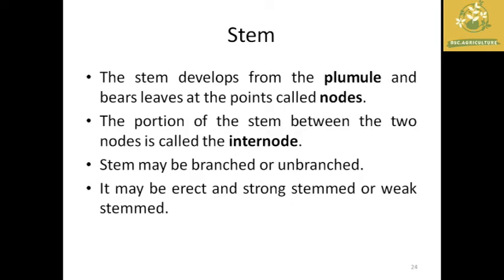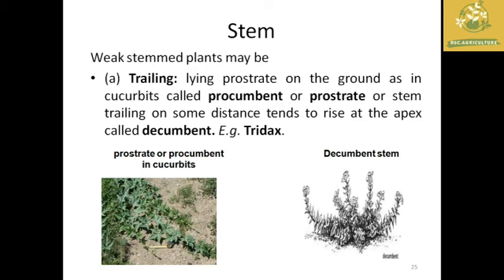Now we look at the classification of stem. Stems are produced from the plumule of the seed, bear leaves at points called nodes, and the portion between two nodes is called an internode. Stems may be branched or unbranched and either erect or weak. Weak-stemmed plants include trailing types, which lie on the ground and cannot stand upright; examples: cucumber, Tridax.